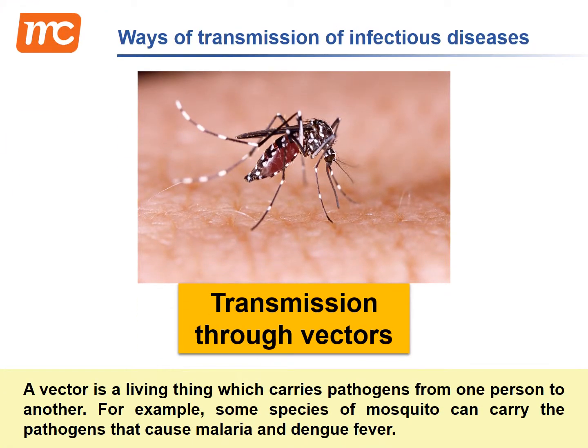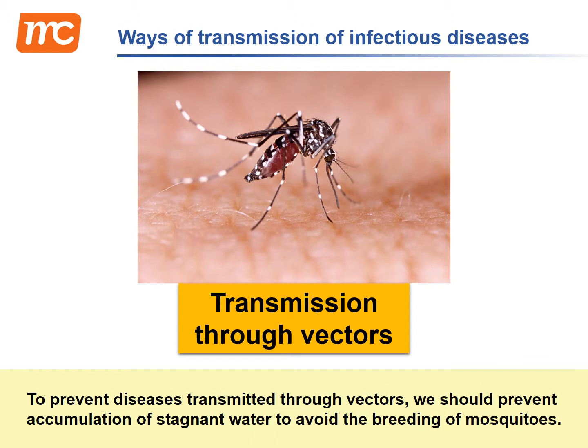A vector is a living thing which carries pathogens from one person to another. For example, some species of mosquito can carry the pathogens that cause malaria and dengue fever. To prevent diseases transmitted through vectors, we should prevent accumulation of stagnant water to avoid the breeding of mosquitoes.